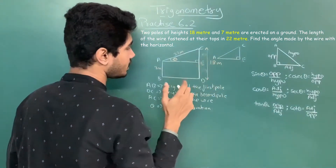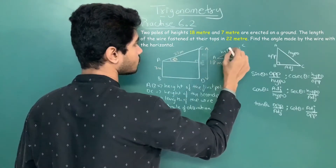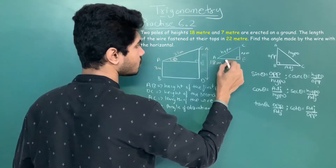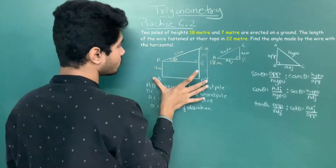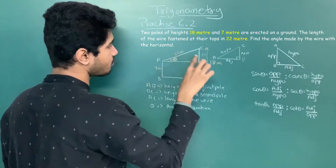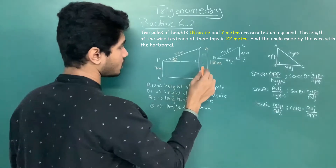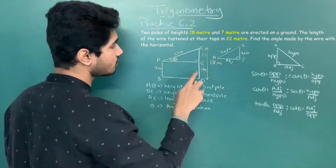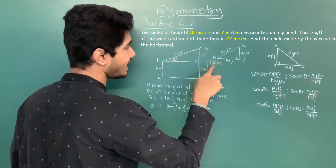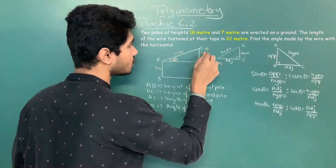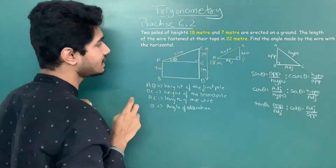In the triangle, E is the 90-degree point. So this becomes the height of the pole (opposite), and this becomes the adjacent. AB is parallel to ED, so ED is 7 meters. If we subtract 7 from 18, we are left with 11 meters. So we get the value of CE, that is 11 meters.